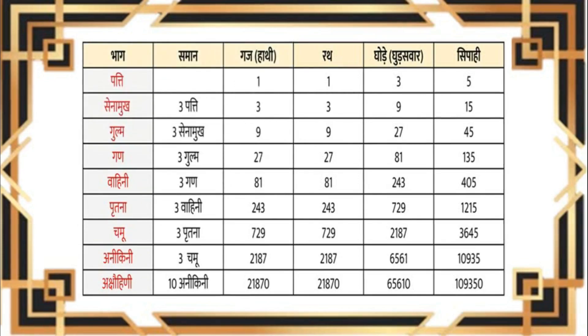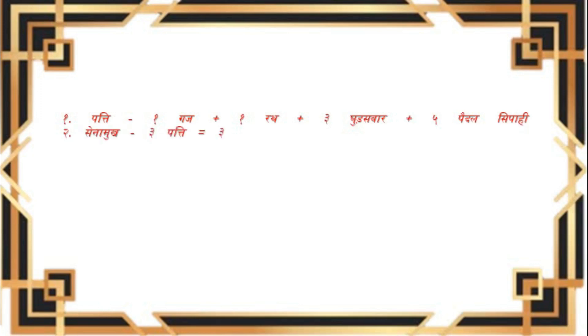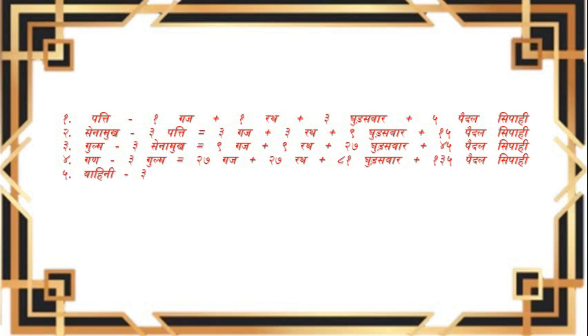महाभारत आदिपर्व अध्याय 2, श्लोक 19-22 का अर्थ: उग्रश्रवा जी ने कहा — एक रथ, एक हाथी, 5 पैदल और 3 घोड़े, इसे सेना के ज्ञाता विद्वान पत्ती कहते हैं। 3 पत्तियों की एक सेनामुख होती है। 3 सेनामुखों का एक गुल्म होता है। 3 गुल्मों का एक गण। 3 गणों की एक वाहिनी। 3 वाहिनियों की एक पृतना। 3 पृतनाओं की एक चमू। 3 चमुओं की एक अनीकिनी, और 10 अनीकिनियों की एक अक्षोहिनी होती है।